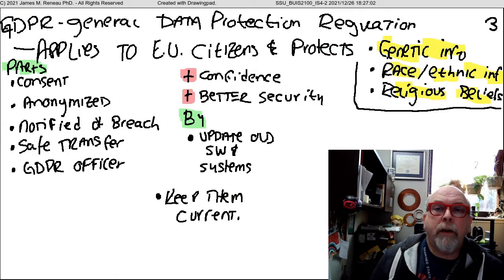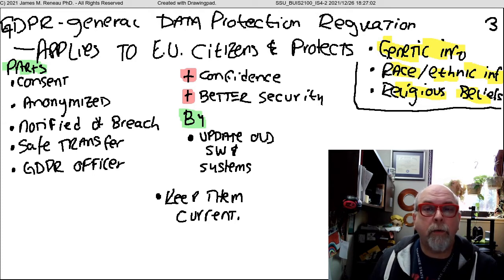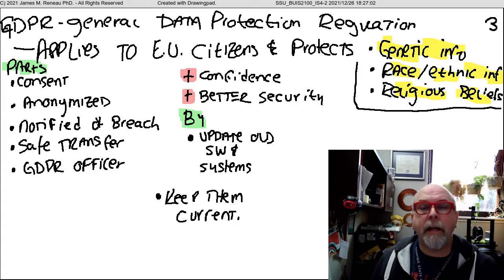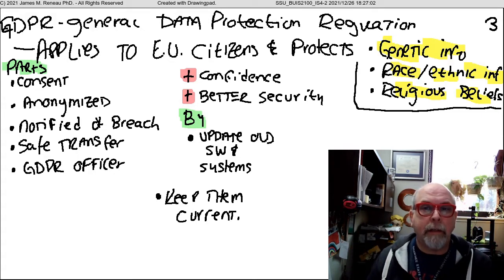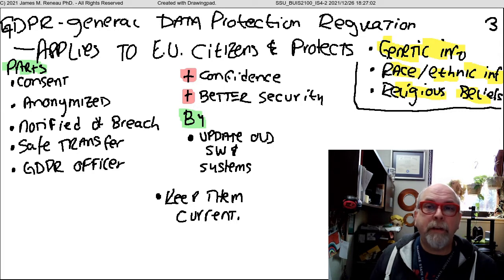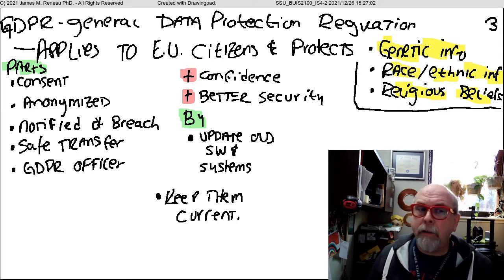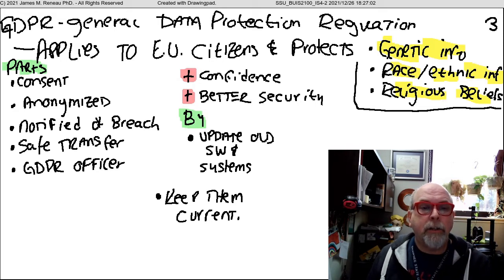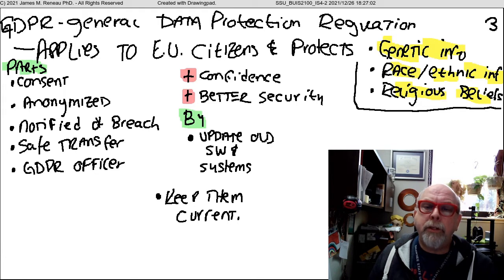If we were in Europe as EU citizens or in an EU treaty country, there is something known as the GDPR — the General Data Protection Regulation. It's a much more holistic privacy protection system covering all European countries. If you do business in Europe or even have European customers or individuals looking at your accounts or systems, you really need to apply the GDPR regulations. The GDPR protects genetic information, race and ethnic information, and information dealing with religious beliefs.